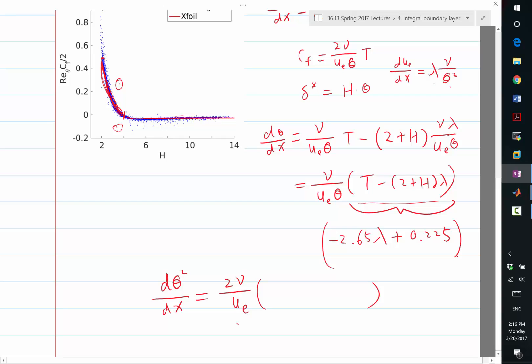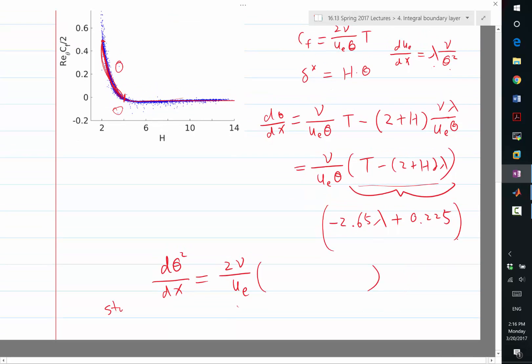The fact that ue equal to zero, while d theta squared dx has to be finite, right? I mean, we know at the stagnation point that theta is actually relatively constant, so d theta squared dx is definitely finite. And ue is equal to zero, what does that mean? Well, it means this thing has to be equal to zero. So at the stagnation point, we start the solution with 2.65 lambda equal to 0.225.